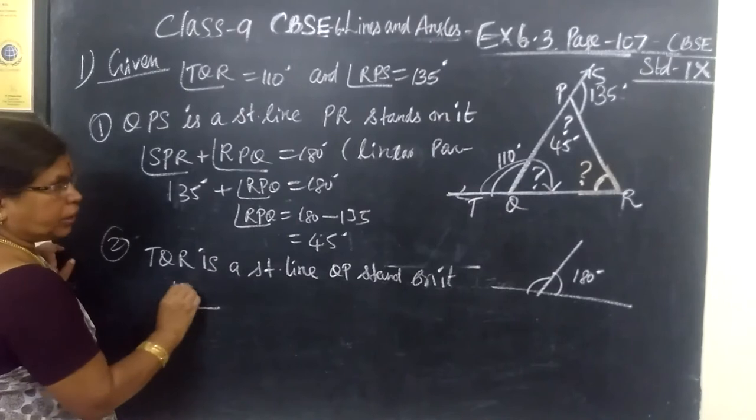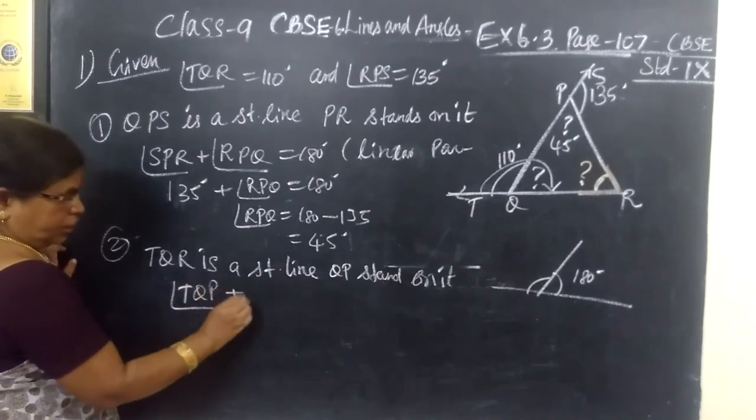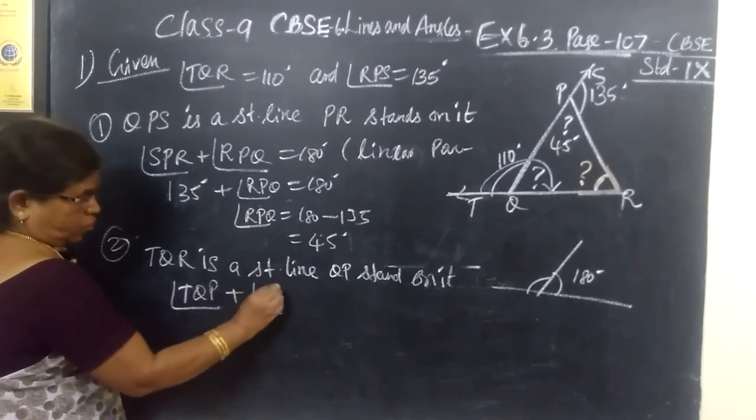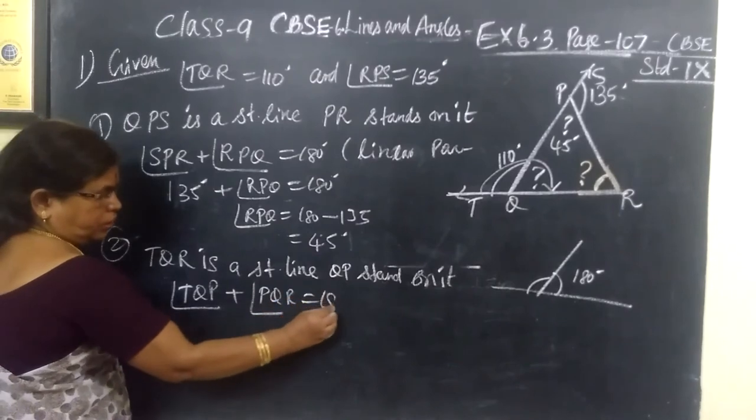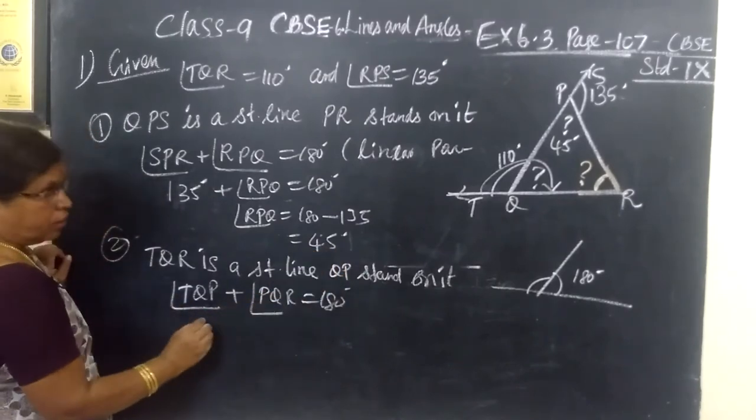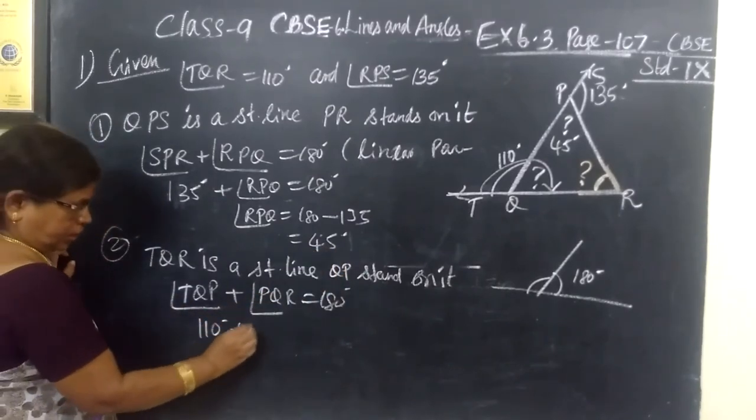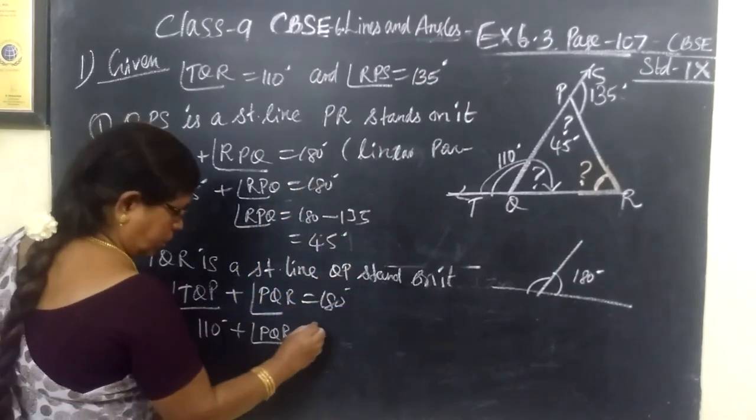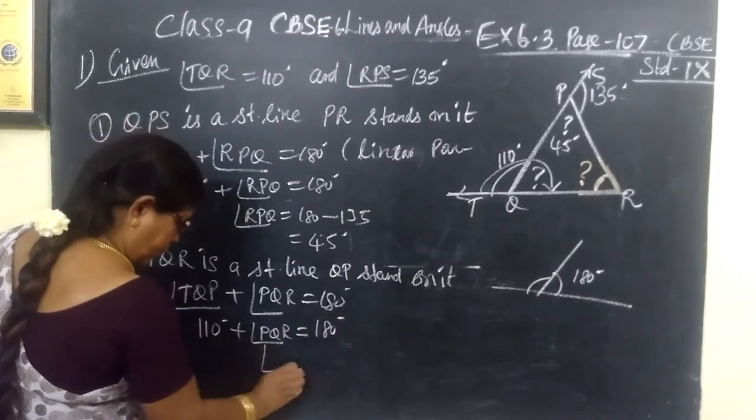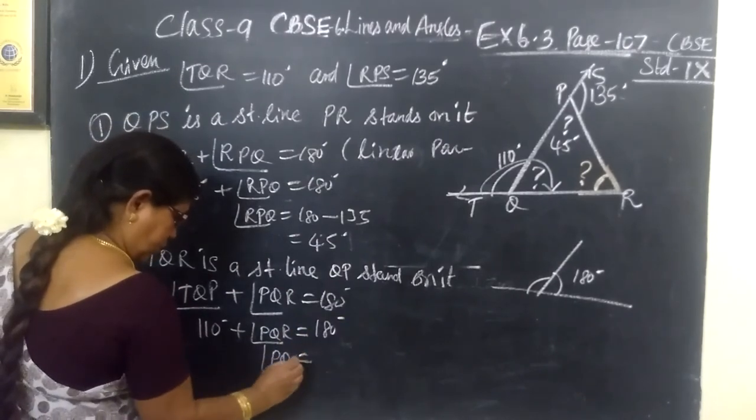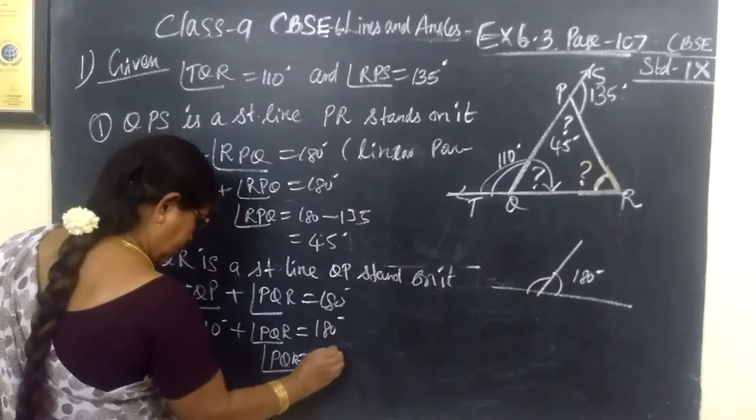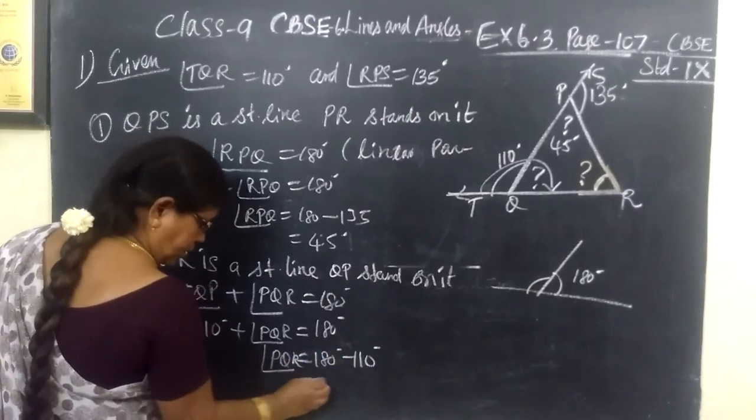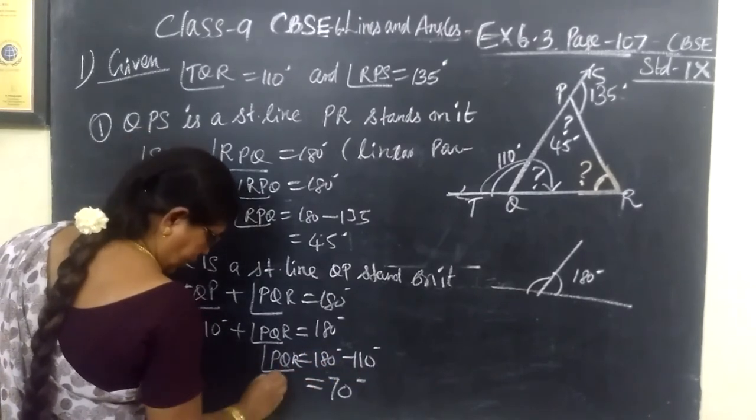Therefore, TQP plus PQR, that is equal to 180 degrees. This is 110. Then PQR equal to 180. Therefore, PQR equal to 180 minus 110 equal to 70 degrees.